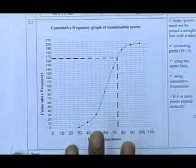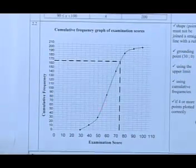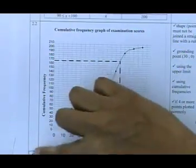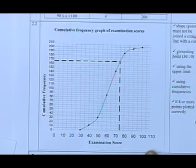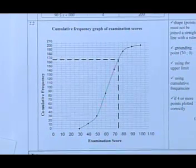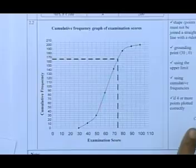5 out of 5 for drawing this ogive. I hope you understand. It is the cumulative frequency on the y-axis. And the examination scores were on the x-axis. Everybody, I hope you understood that. Just quickly again, learners. For the cumulative frequency graph, it is the upper limit. The upper limit with your cumulative frequency.